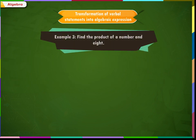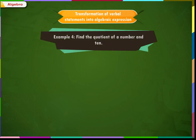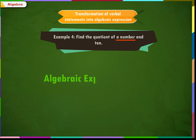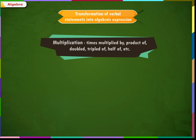Example 3: Find the product of a number and 8. The word 'product' means multiplication, and 'a number' can be considered as Y. So we can write the algebraic expression as 8Y. Example 4: Find the quotient of a number and 10. The word 'quotient' relates to division, and 'a number' is Y. So the algebraic expression is Y divided by 10.